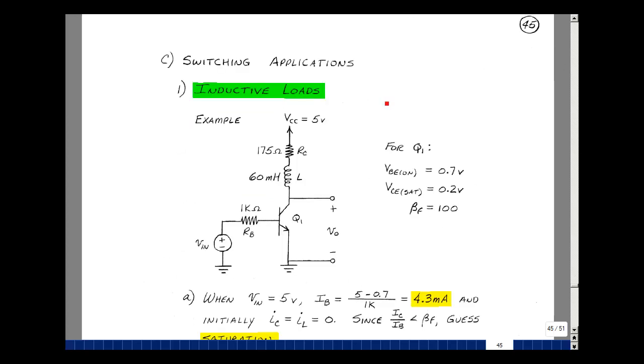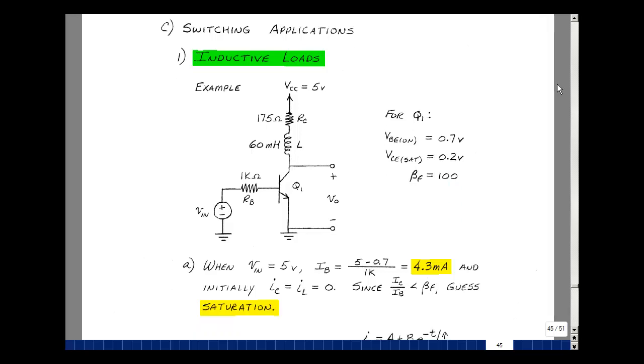Let's take a look at switching an inductive load. Suppose I have an inductor that has some series resistance in the collector lead of this inverter circuit. And suppose that the value of VB on is 0.7, VCE sat is 0.2, and beta f is 100. Suppose that t equals t0 plus, we apply 5 volts here. The current's going to be this node voltage minus this node voltage divided by 1k, and that's 4.3 milliamps.